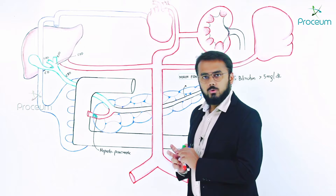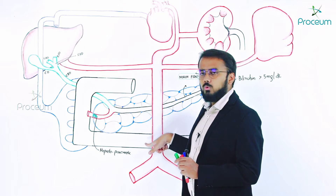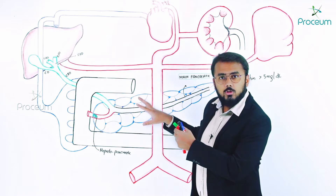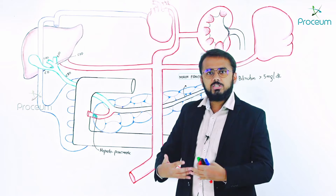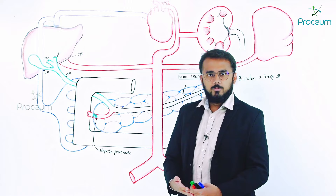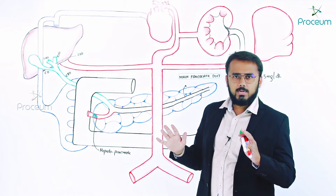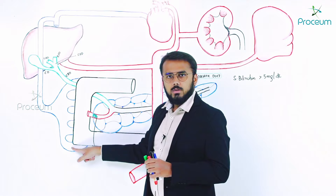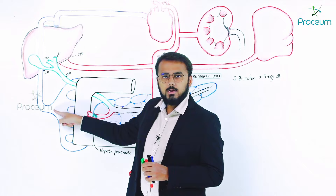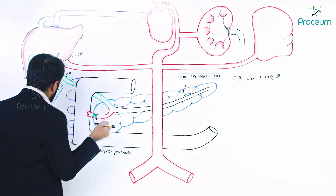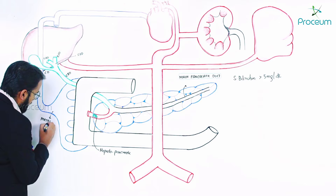When I drew the duodenum here, my main intention is to focus on the entire GIT — all the way from the duodenum down to the colon. This part represents your entire intestine. All the veins from the intestine together join to form a special vein called the portal vein.